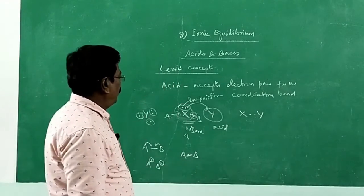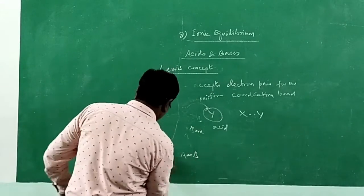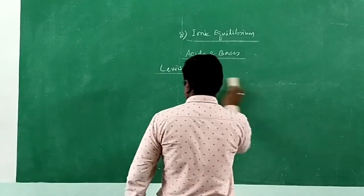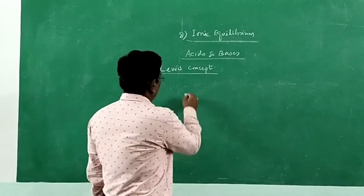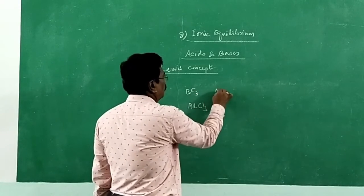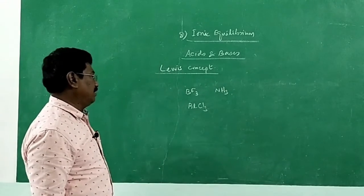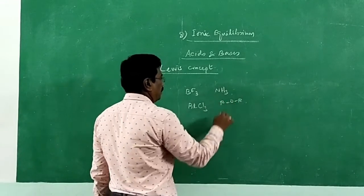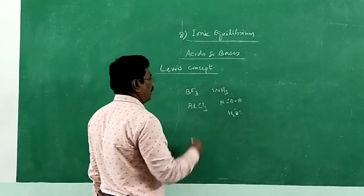Let us take the example of boron trifluoride and ammonia — two molecules. Boron trifluoride is a very common example; whenever we think of Lewis concept, immediately in your mind you should get boron trifluoride and ammonia. Also aluminium trichloride and ammonia are common examples. Sometimes ether can also be given as an example because it has lone pair of electrons. Water also has lone pair of electrons.